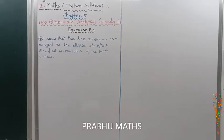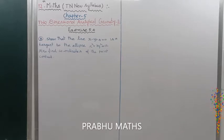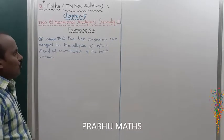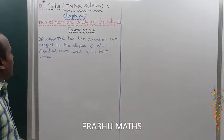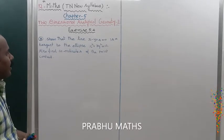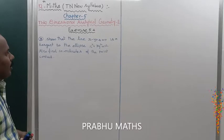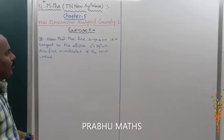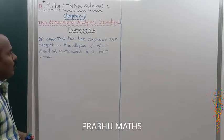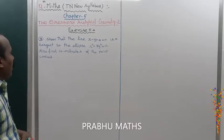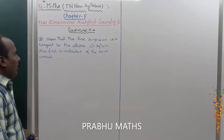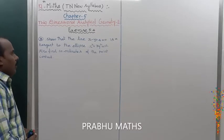X is 5.4. Show that the line x minus y plus 4 is equal to 0 is a tangent to the ellipse x square plus 3y square is equal to 12. Also find the coordinate of the point of contact.